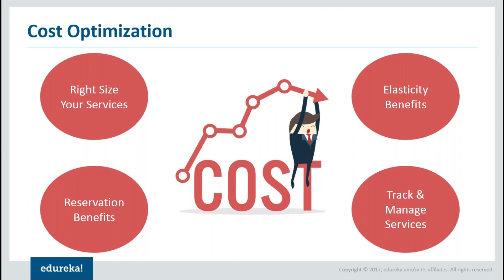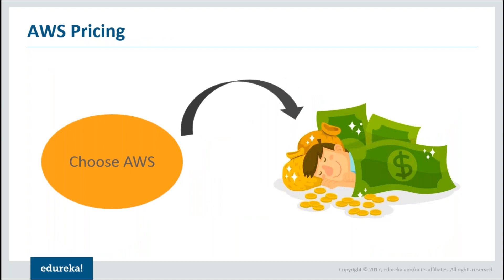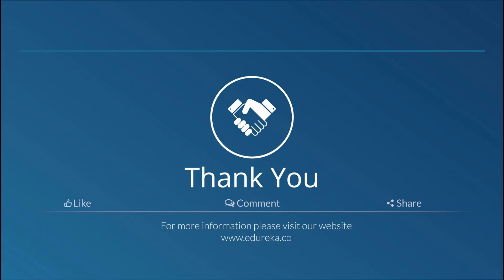These are the points that are very important when you consider cost optimization, and this was the last point of today's session on AWS pricing. If you're concerned about picking a proper cloud service provider, I would say choose AWS and it would definitely ensure that you sleep with a lot of cost optimized. I hope you had something new to learn from this session. Thank you. Bye bye.